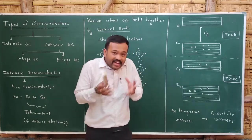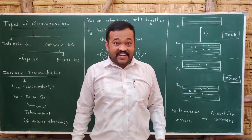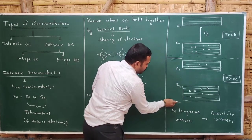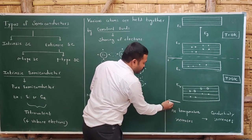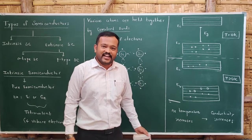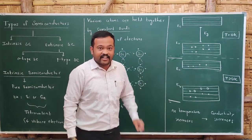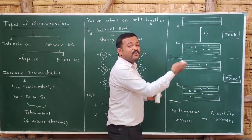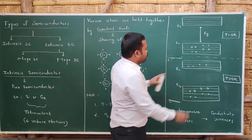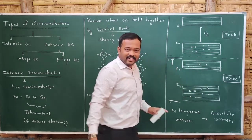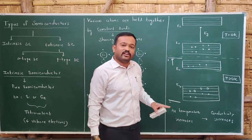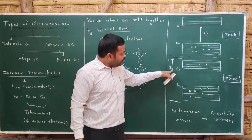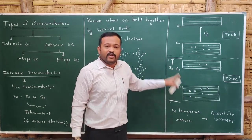When an electric field is created — say, positive on one side and negative on the other — electrons move towards the positive potential. These free electrons are now able to move. They move towards the positive potential, and the current due to the motion of these electrons is called IE.